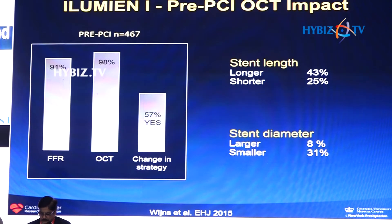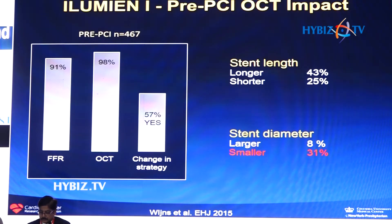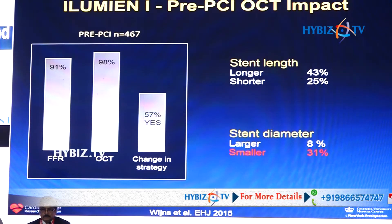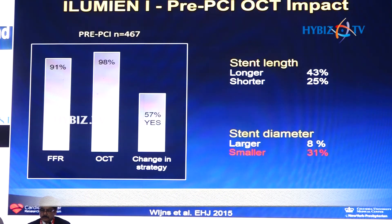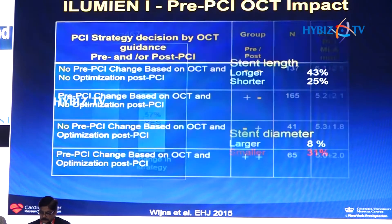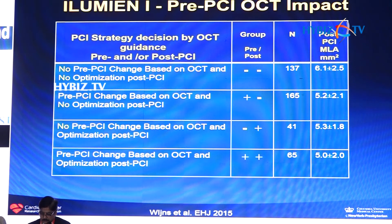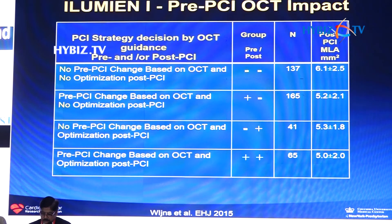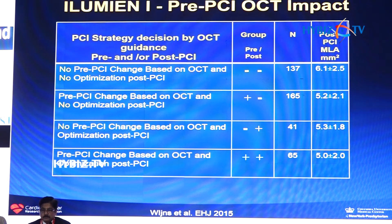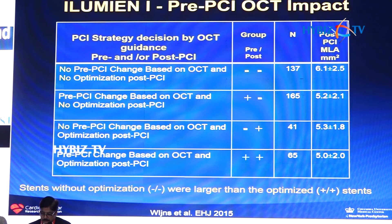Illumine 1 was an interesting registry study where FFR and OCT was performed in every single case, and one of the most interesting findings was that in 31 percent of cases, OCT led you to choose a smaller stent size. There are very few situations in interventional cardiology where we should be planning to use a smaller stent diameter — the only one I can think of is to try to prevent making a hole. In the Illumine 1 study, patients who had no OCT imaging had a significantly larger stent compared to those who had OCT before and after, telling us that OCT is so accurate and precise that it's even more accurate than what you were trained about what size a stent actually is.